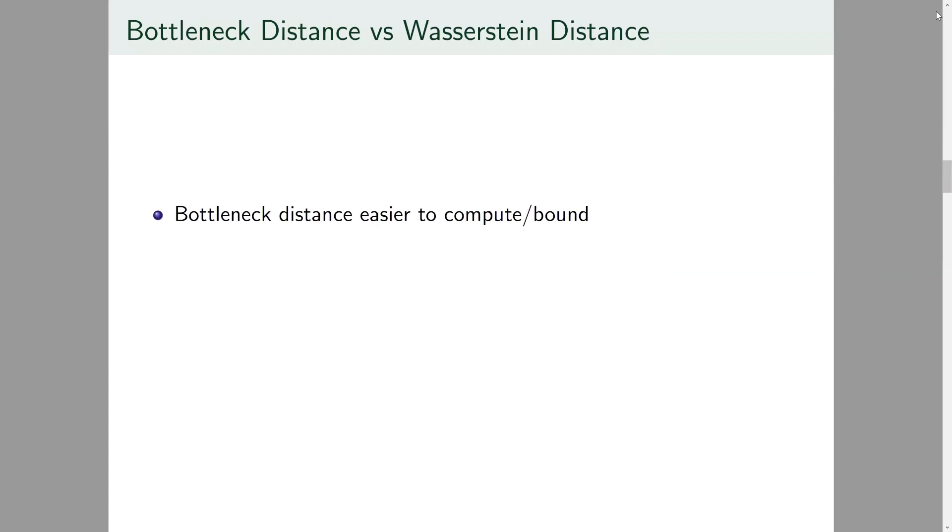This leads to a good question of why might we use one distance over the other. Well on one hand the bottleneck distance may be preferred because it's easy to compute and easier to bound. On the other hand Wasserstein distances are larger than bottleneck distances and so bounds on Wasserstein distances imply stronger results about how close infimal pairings can be. Bottleneck distances don't distinguish between cases where one pairing of points is far away from each other compared to those where every pairing of points is far away from each other for instance.